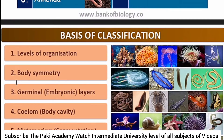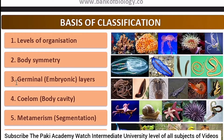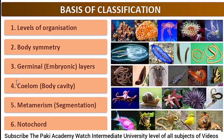Now we have to understand the basis of classification — the areas in which we have classified animals. These include: levels of organization, because every animal's body organization is different from each other; body symmetry; germinal and embryonic layers; coelom, which is the body cavity; metamerism, which is the segmentation of the animal's body; and notochord, which is also called a skeleton.